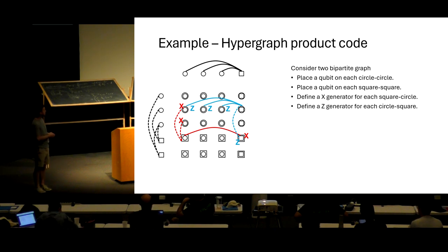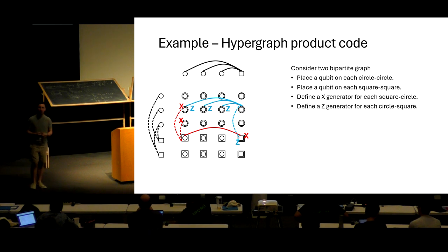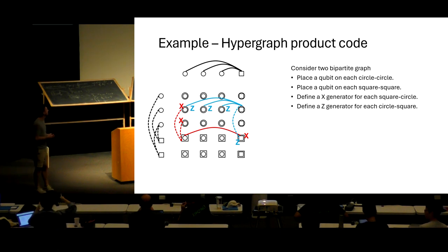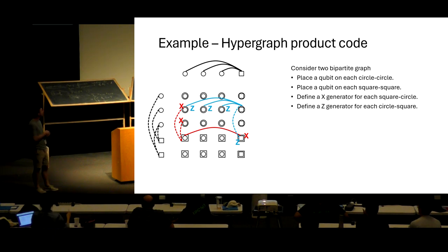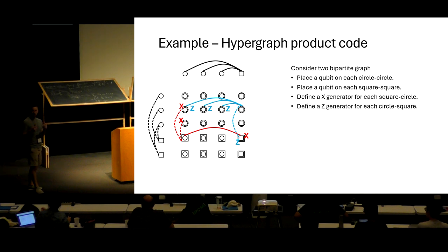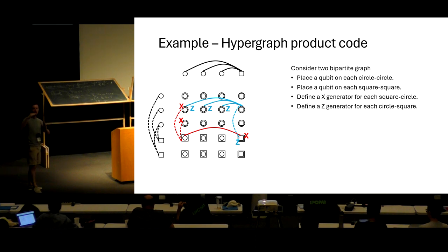These codes correspond to taking the product of two chain complexes, each defined by a Tanner graph. You can give me any pair of graphs — one vertical graph here, one horizontal graph here — and from that I will build a quantum code. Those are the two inputs.